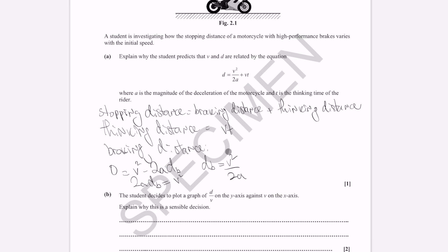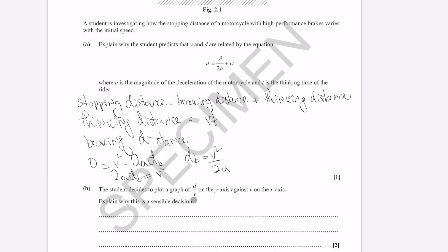So adding those up, we get the braking distance plus thinking distance is equal to this expression. The student decides to plot a graph of d over v on the y-axis and v on the x-axis. Explain why this is a sensible decision.